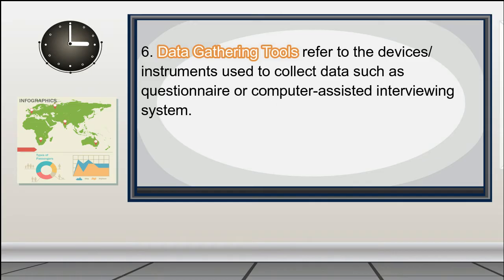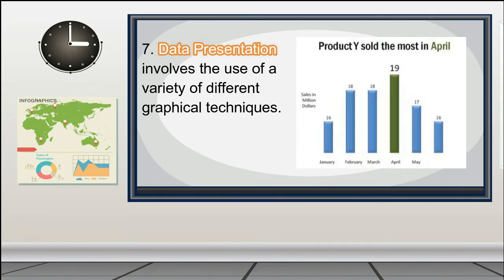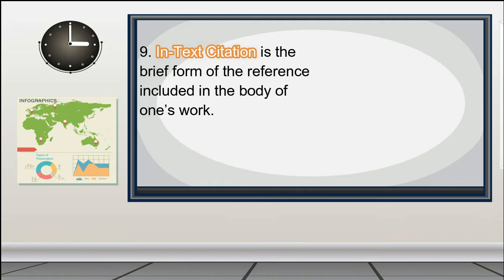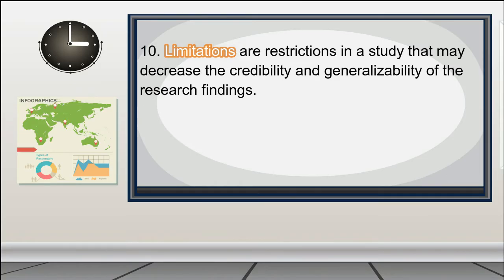6. Data gathering tools — refer to devices or instruments used to collect data such as questionnaire or computer-assisted interviewing system. 7. Data presentation — involves the use of a variety of different graphical techniques. 8. Descriptive study — a research design that describes what is; for example, a survey. 9. In-text citation — the brief form of the reference included in the body of one's work. 10. Limitations — restrictions in a study that may decrease the credibility of the research findings.